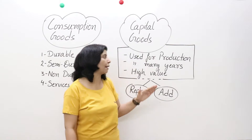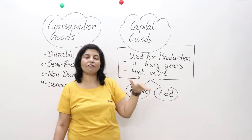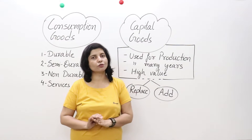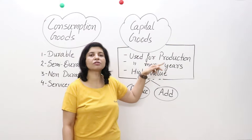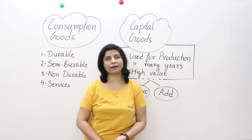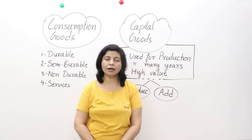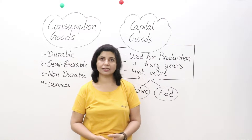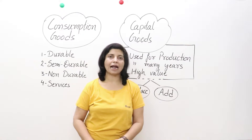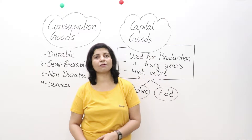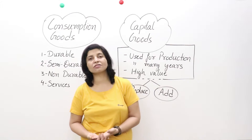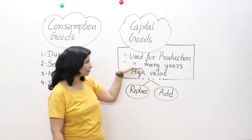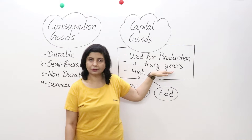The criteria of a capital good: they are used for production only and not for consumption. Things used to make goods and services — like a big oven in a bakery, a printing machine in a publishing house, or tractors and harvesters used by farmers in fields to produce grains — these are known as capital goods. They cannot be consumed directly for satisfaction of wants.